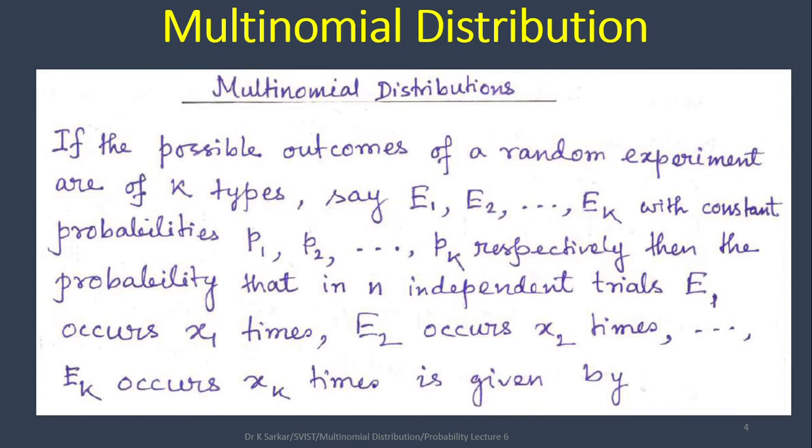What is multinomial distribution? If the possible outcomes of a random experiment are of k types, say e1, e2, up to ek, with constant probabilities p1, p2, up to pk respectively, then the probability that in n independent trials e1 occurs x1 times, e2 occurs x2 times, up to ek occurs xk times,